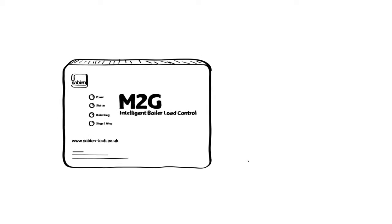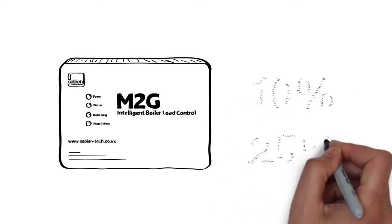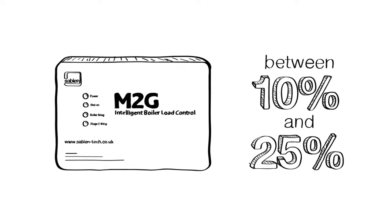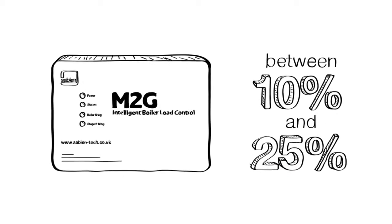The M2G. If you're wondering what it is and how it can reduce your energy costs by between 10% and 25%, then let us explain.